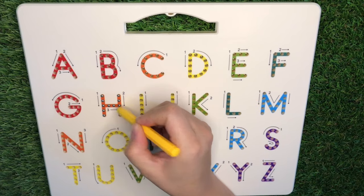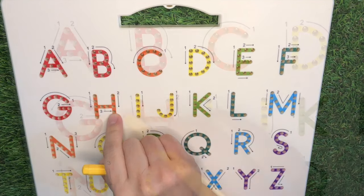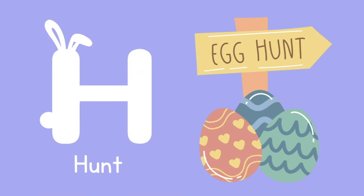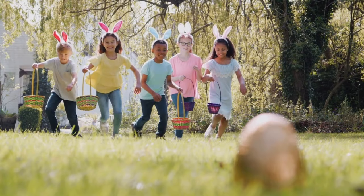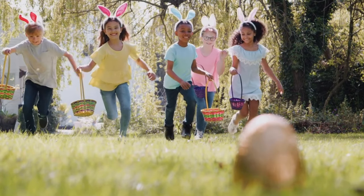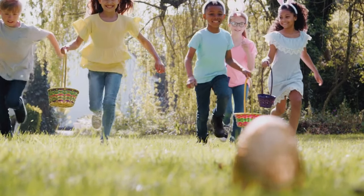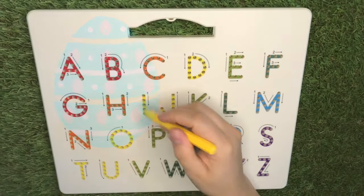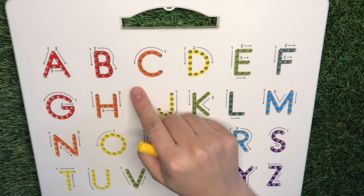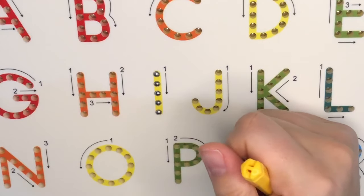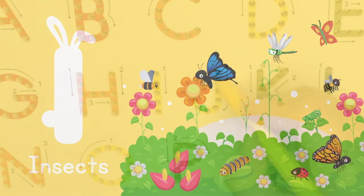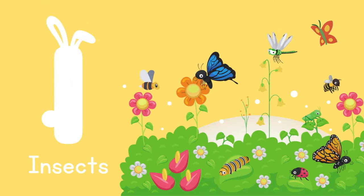H is for hunt — egg hunt! Letter I is for insects. These insects are typical in spring.